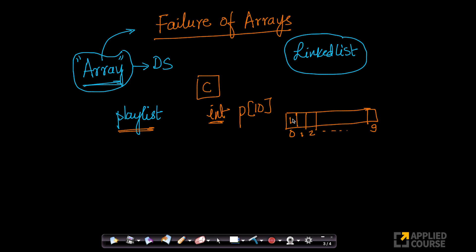So I can say my first video should be the video with ID 13, second video should be the video with ID 6. So here I am basically storing the IDs of my videos — or my songs, whatever it is. I am storing some IDs. This is all good; here I have space.